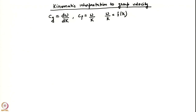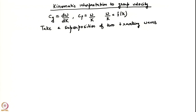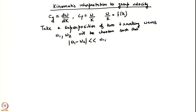Let us understand the concept of group velocity in a little more detail, because that will be important for physically interpreting the solutions to the Cauchy-Poisson problem. For simplicity, I am going to take a superposition of two travelling waves. We will arrange the waves such that their frequencies ω₁ and ω₂ are chosen so that |ω₁ − ω₂| is much much less than the frequencies themselves — in other words, the frequencies are very close to each other. This can be arranged if we choose the wave numbers of the two travelling waves to be close to each other.